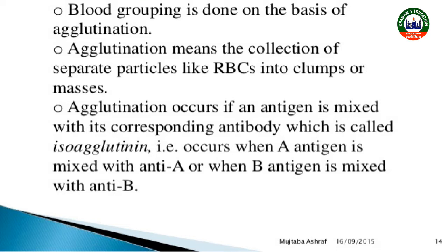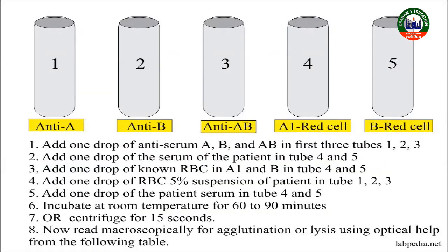Three solutions are taken which are to be used for the detection of blood group. It is a laboratory test — we can perform this procedure in the lab. In this procedure, three solutions are used, which are named: antiserum A, antiserum B, and antiserum D.